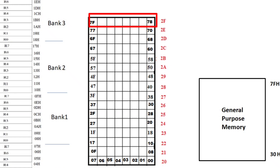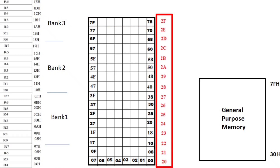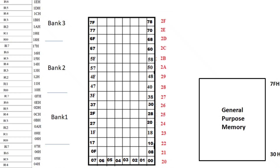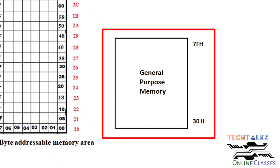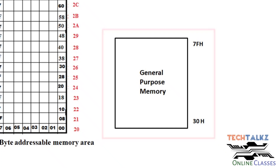Bit addressable means you can access one bit — read or write it — or you can access the whole byte. The corresponding address location is the byte addressable location, where one byte represents the data. There is a distinction: in bit addressable locations, individual bits within the 8-bit address location can be accessed. The remaining 80 bytes of lower 128 RAM, from address 30 hex to 7F hex, form the general purpose RAM area, which is byte addressable.